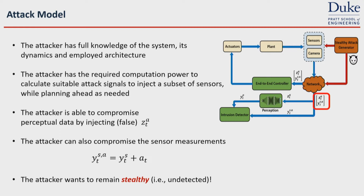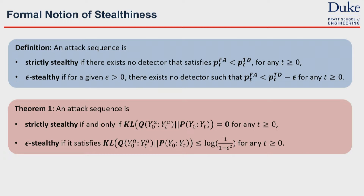We assume the attacker can compromise the perception data by replacing it with false data called z_ta, and can compromise the physical sensors by adding an attack vector at each time step. The goal of the attacker is to be impactful while being STLC. For the notion of STLC-ness, we consider the most general format. We call an attacker strictly STLC if there is no detector that can satisfy probability of true detection being greater than probability of false alarm at any time. And it is epsilon-STLC if, for a given epsilon, the difference between probability of true detection and false alarm is bounded by epsilon.